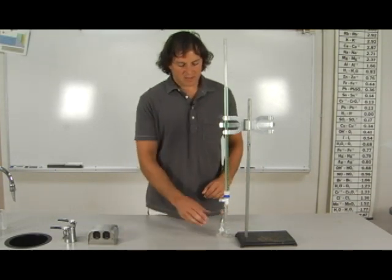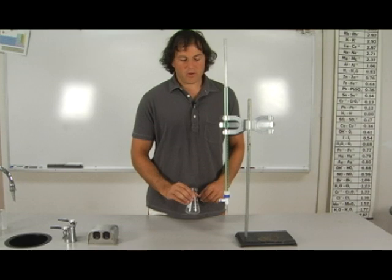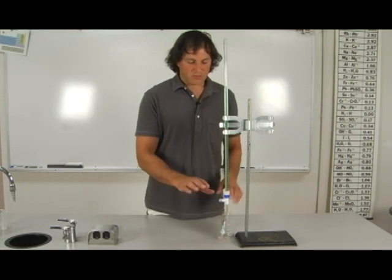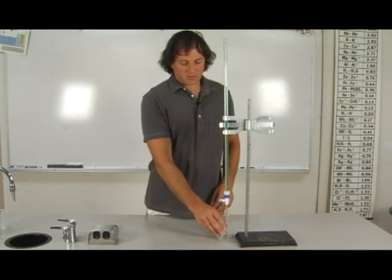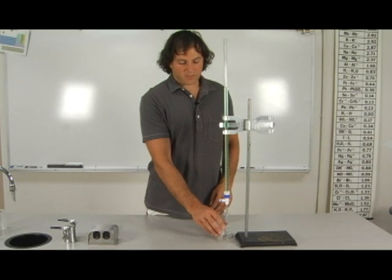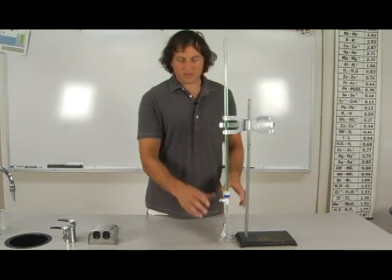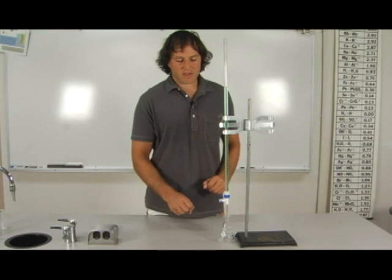We set the burette up on a stand and usually use an Erlenmeyer flask with this. Make sure that the burette's level is slightly below the top level of the Erlenmeyer flask. That way you tilt the flask in so all the fluid leaving the burette makes it into the Erlenmeyer flask.